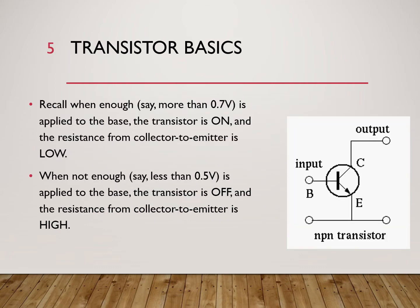Let's recall our transistor basics. When enough voltage is applied to the base input, the transistor is said to be on, and the resistance of the transistor — specifically the collector-to-emitter resistance — is low. On the other hand, when not enough voltage, say less than 0.5 of a volt, is applied to the base, then the transistor is off and the collector-to-emitter resistance is quite high.